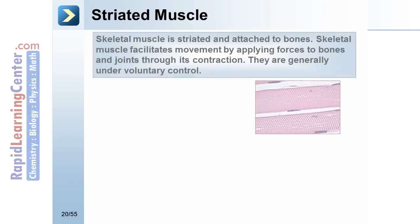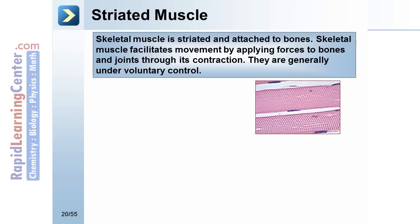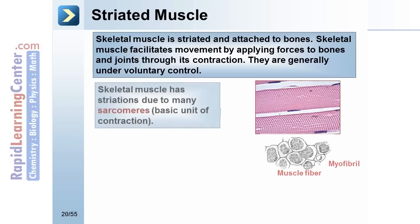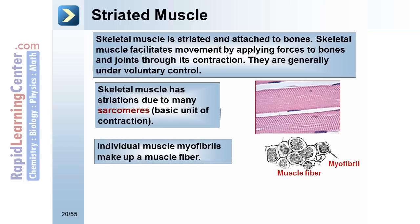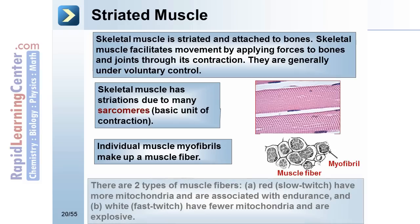Skeletal muscle is striated and attached to bones. It facilitates movement by applying forces to bones and joints through contraction and is generally under voluntary control. Skeletal muscle has striations due to many sarcomeres, which are the basic unit of contraction. Individual myofibrils make up a muscle fiber. There are two types of muscle fibers: red, or slow-twitch, which have more mitochondria and are associated with endurance; and white, or fast-twitch, which have fewer mitochondria and are explosive.